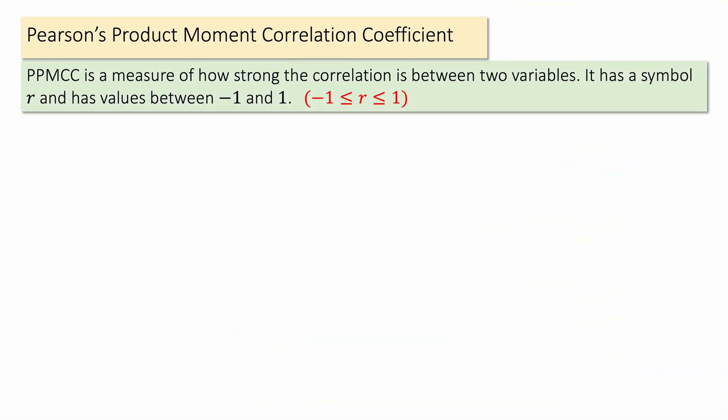Pearson's product moment correlation coefficient is a measure of how strong the correlation is between two variables. It has a symbol r, and its values are between minus one and one. So minus one is less than or equal to r is less than or equal to one.